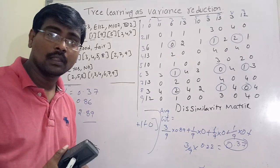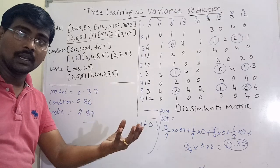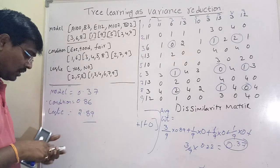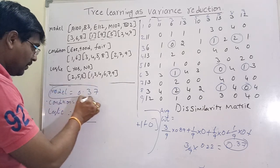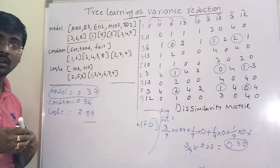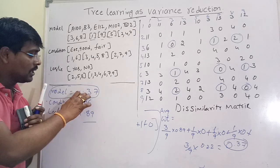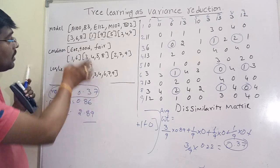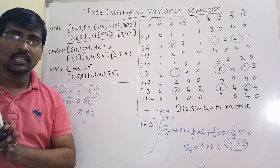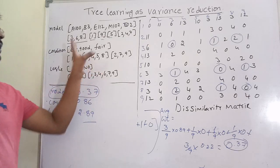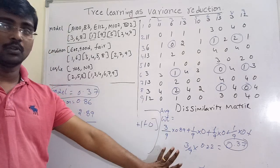The less value means the more similar elements in the cluster. So at the top level, we are dividing based on model, since model has the lowest average weighted dissimilarity of 0.37. The model has three branches, and we again apply the same procedure recursively — the same concept repeated multiple times, as already discussed in the regression tree.